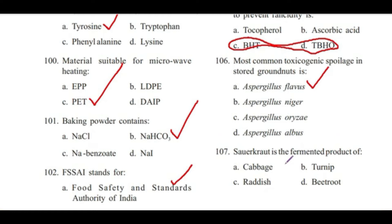Question 107: Sauerkraut is the fermented product of — cabbage, turnip, radish, or beetroot? Answer is A, cabbage.